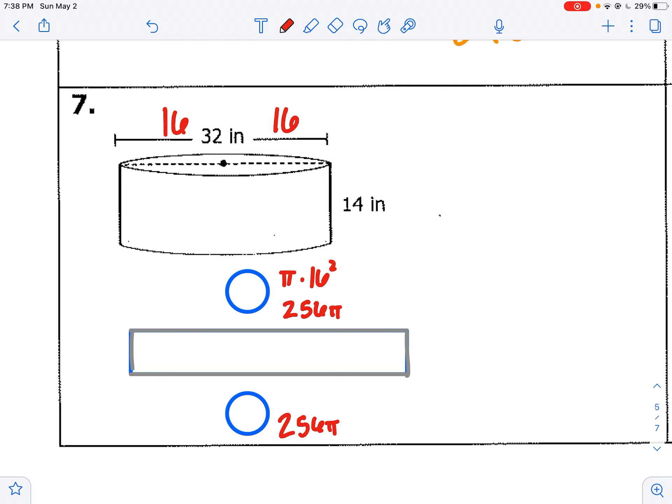Now to find the rectangle, we need two things. We need the base. We need the height. The height's not too bad to find. It's given as 14. But if you took a piece of paper and rolled it into a cylinder...